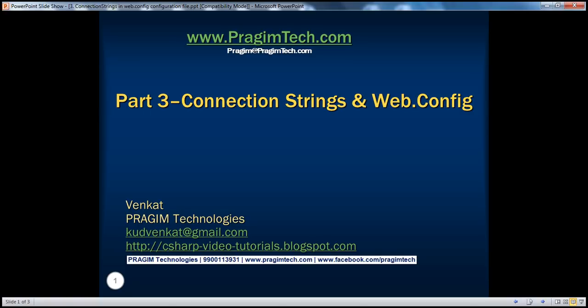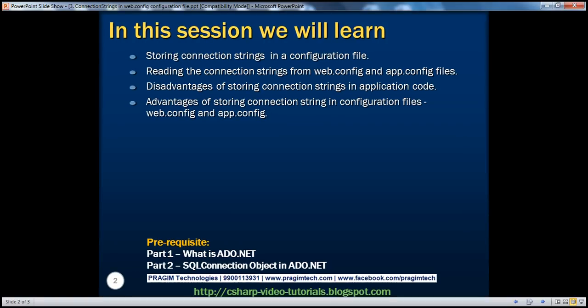Hello, welcome to Prism Technologies. I'm Venkat. This is part 3 of the ADO.NET video series. In this session, we'll learn about storing connection strings in a configuration file, and reading the connection strings from configuration files such as web.config and app.config files. We'll also cover the disadvantages of storing connection strings in application code, and the advantages of storing them in configuration files.